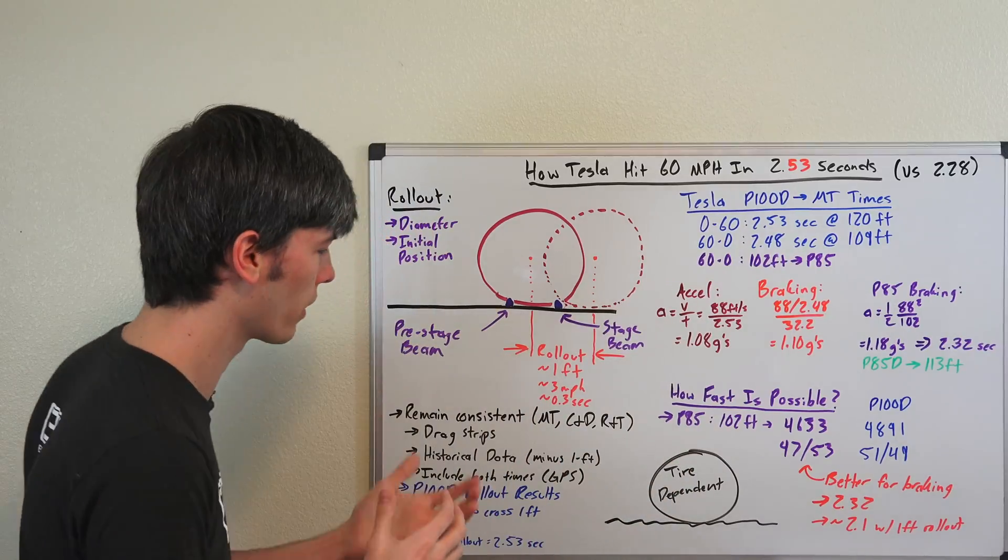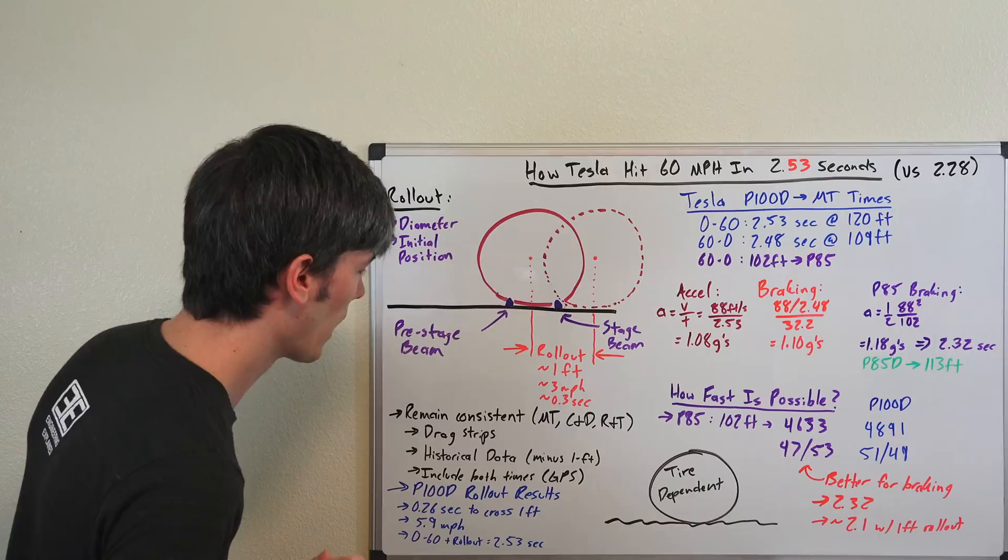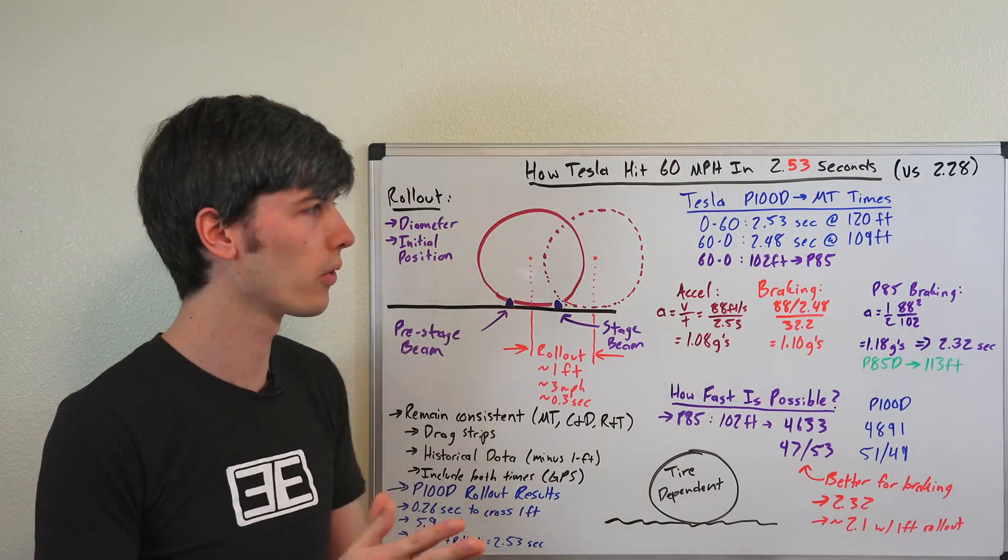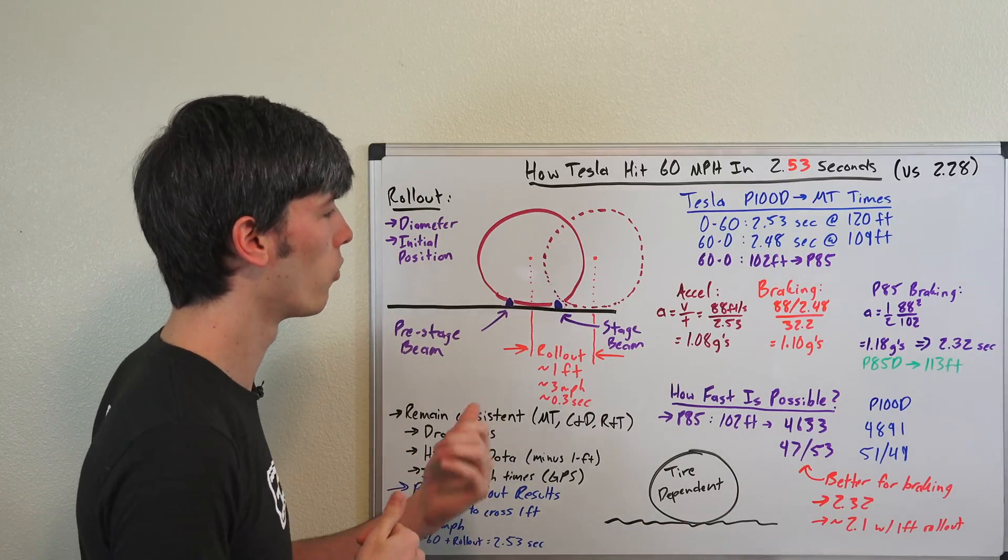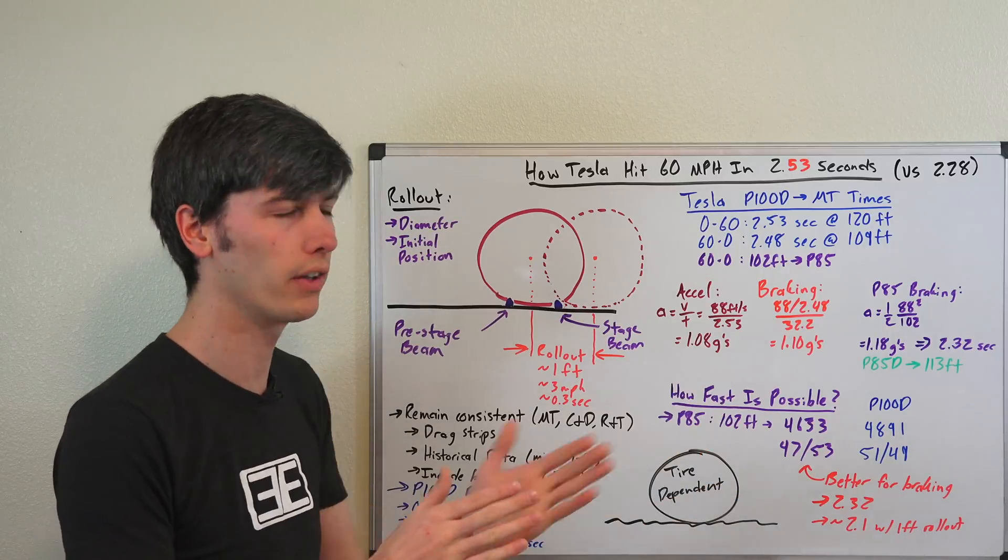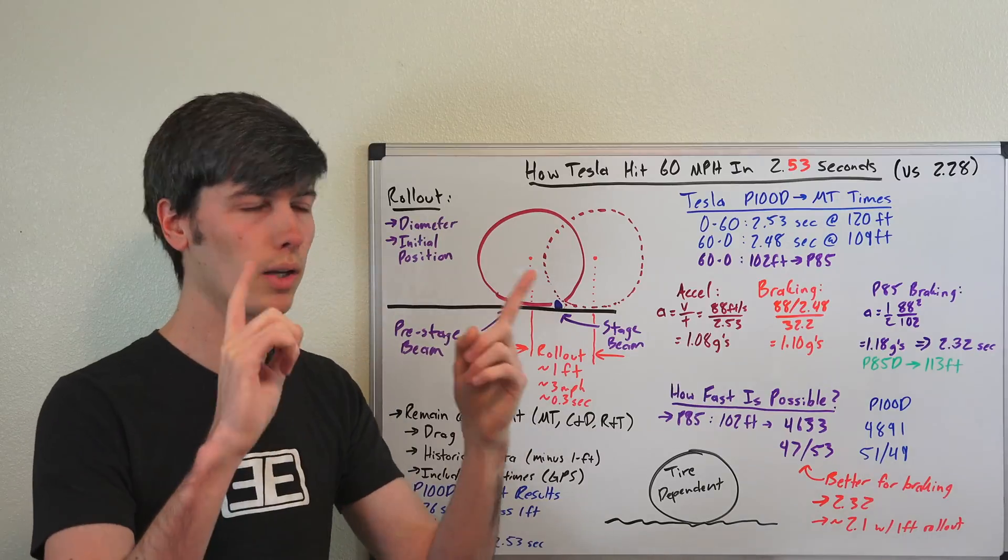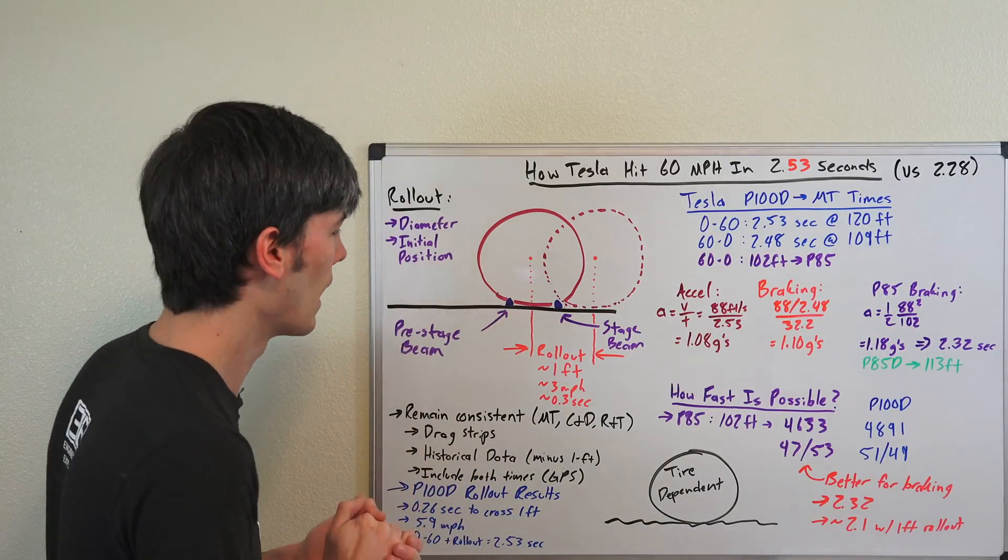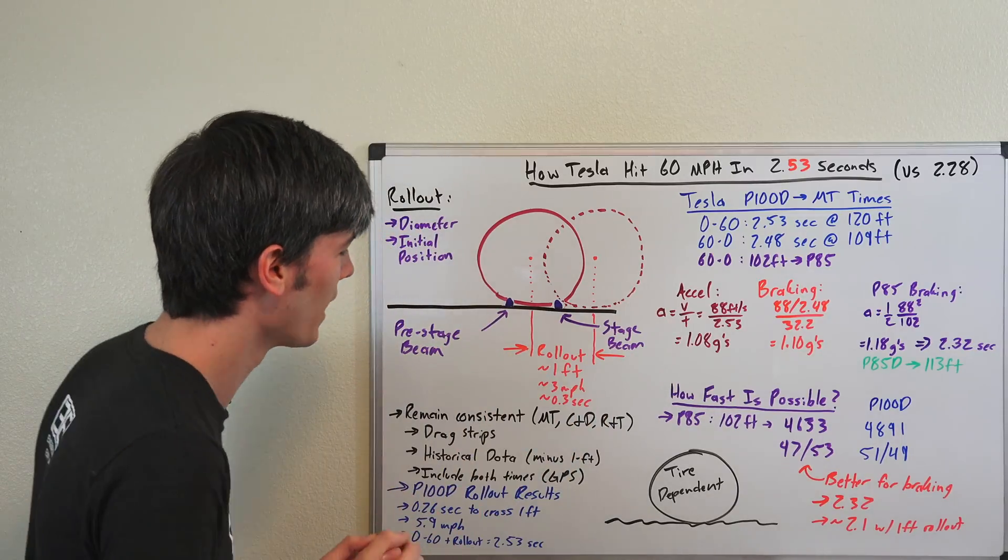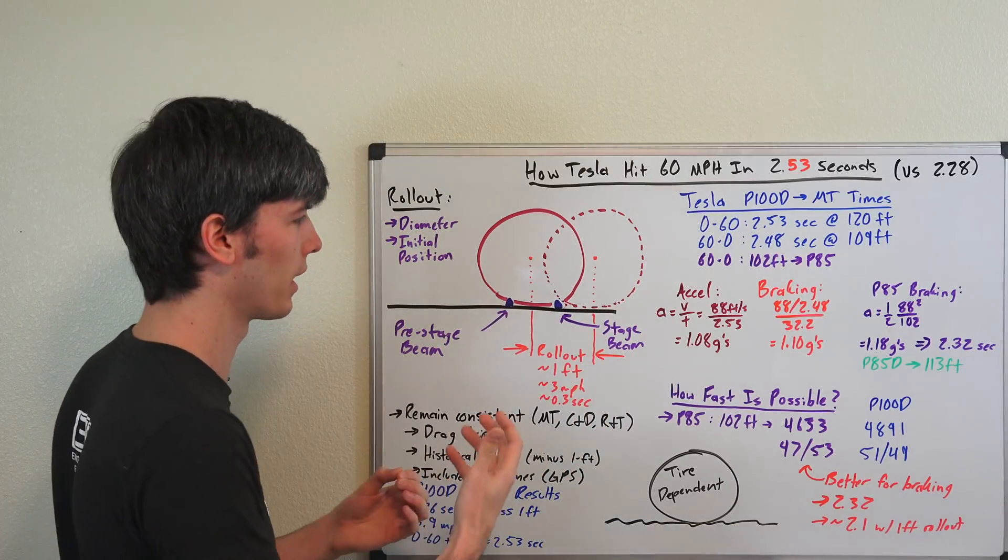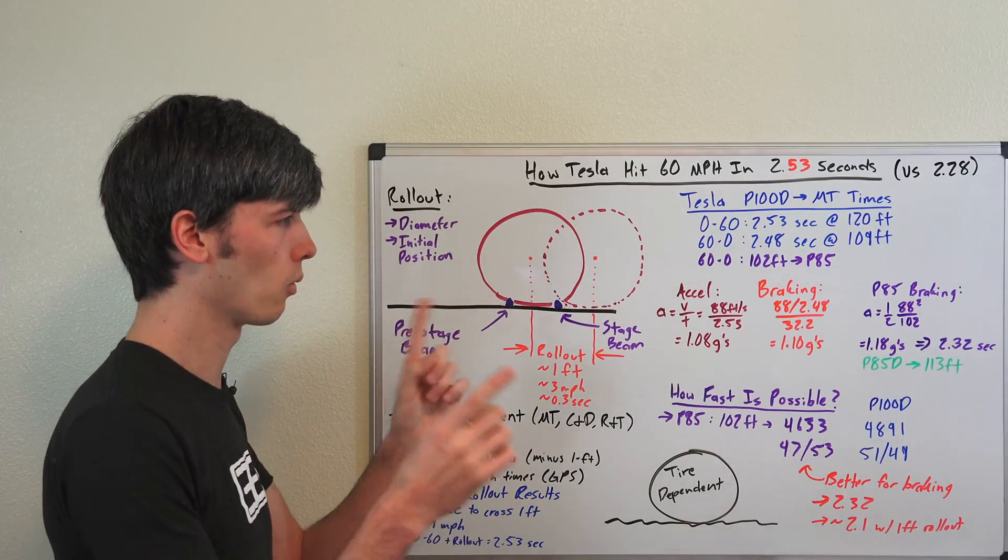And then also it's done to remain consistent with historical data. So nowadays we can do all of this with GPS and you can get the true 0 to 60 time very easily and so many of the magazines will include both numbers for you to look at, but they're going to give you that subtraction of one foot of rollout simply to remain consistent with all of history. So if you go back and look at something in the 1960s and compare it with something from today, you can compare apples to apples.